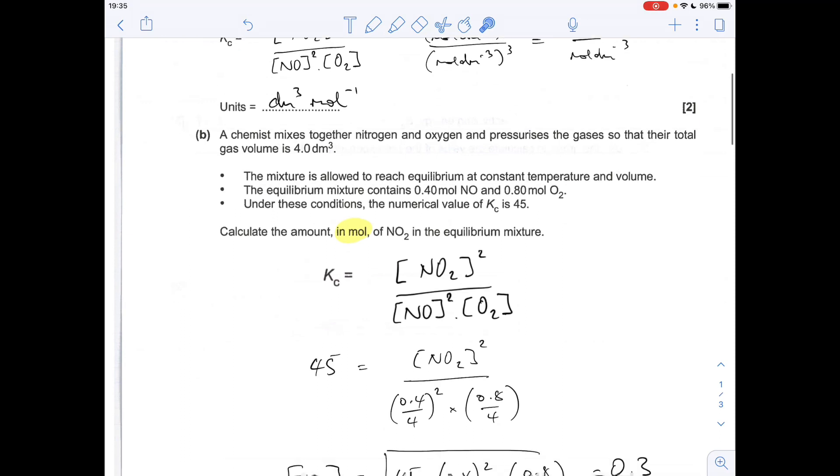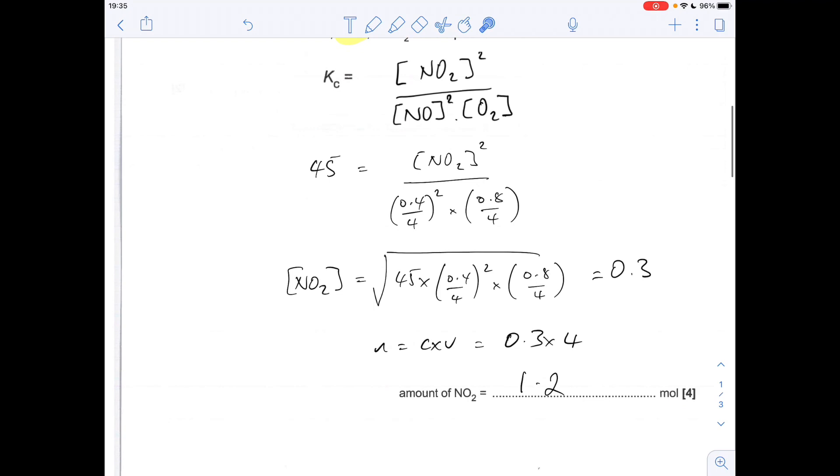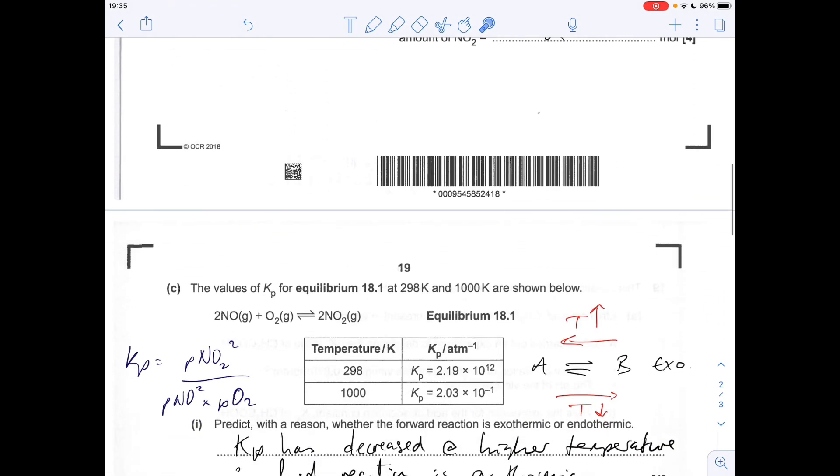So the equilibrium concentration of NO₂ comes out at 0.3 mol/dm³, and then you turn it into moles: concentration times volume, 0.3 times 4 gets you 1.2 moles. That's the calculation over, now we need to deal with the wordy answers.